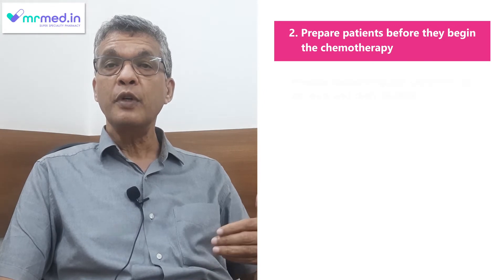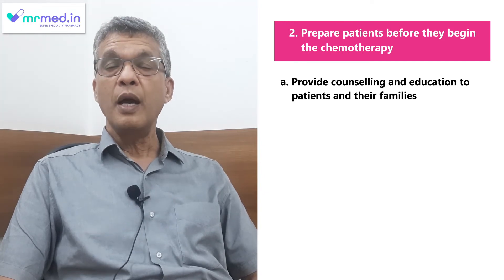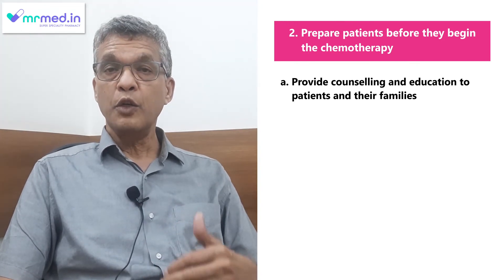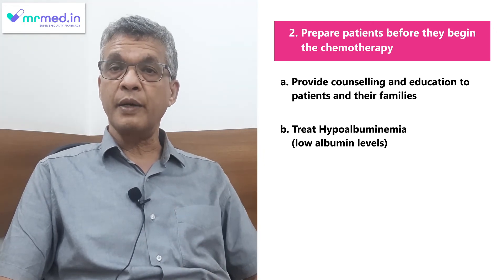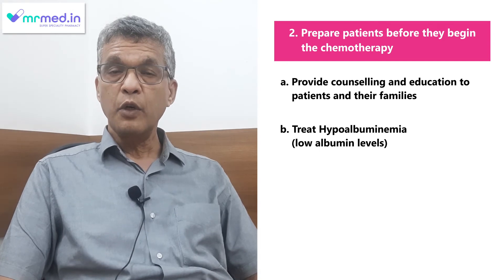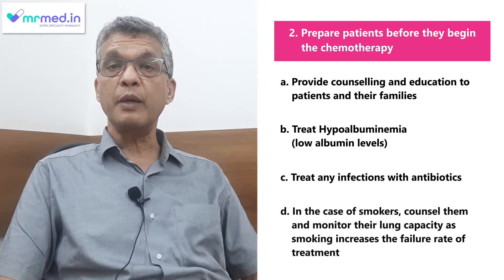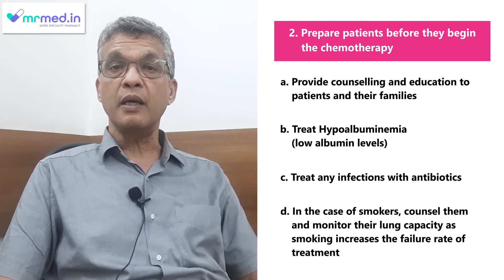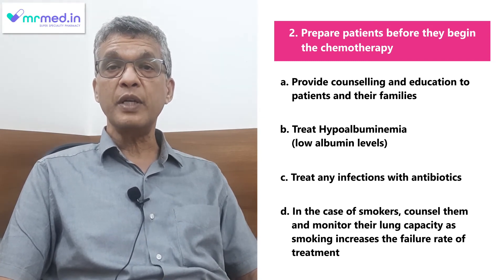The second way is to prepare the patient for chemotherapy beforehand. Instead of just admitting the patient and giving chemotherapy, we admit the patient maybe three or four days before and prepare them. Hypoalbuminemia can be corrected by giving IV albumin. We can give antibiotics and correct infections in the patients. In smokers, we can prepare their lungs better so that they don't get lung infections. This way we can minimize the adverse events of chemotherapy.